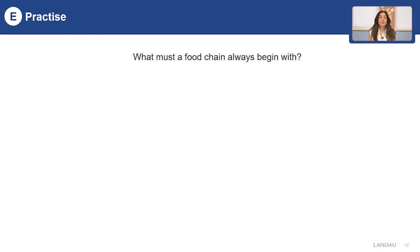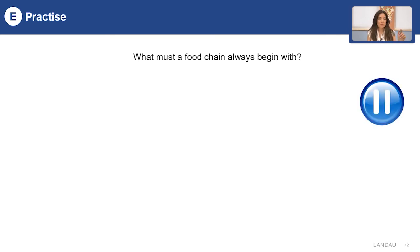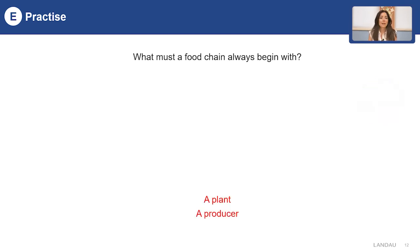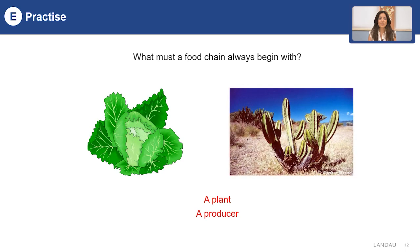The second question is: what must the food chain always start with? You can think about this question and come back with your answer. Yes, of course — it's a plant. A plant is a producer that takes energy from the sun.